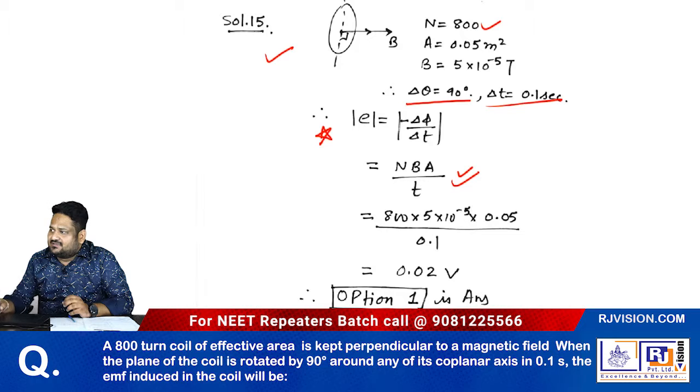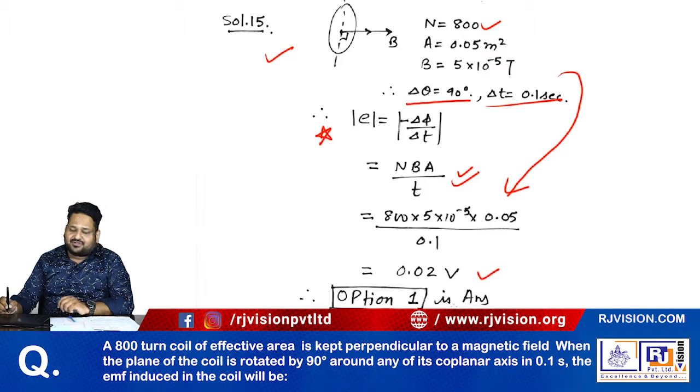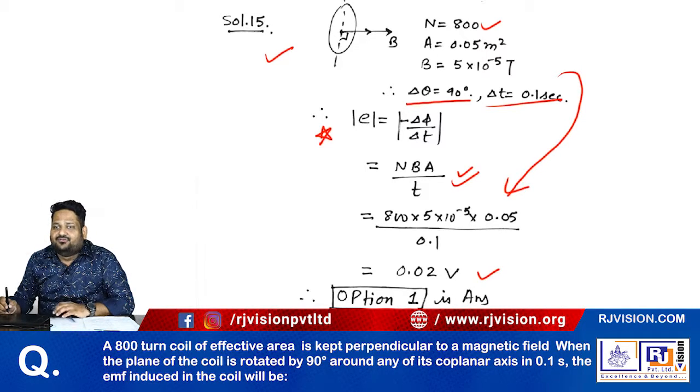Just substitute all the values in this equation. We get 0.02 volts, which means your option number is 1: 0.02 volts.